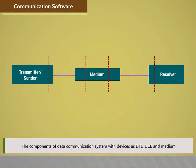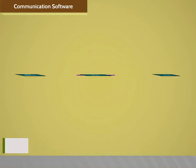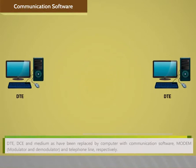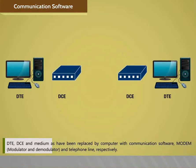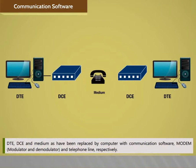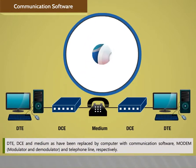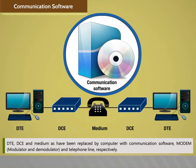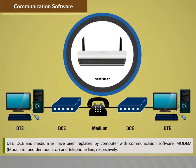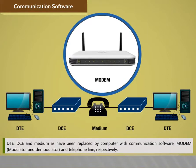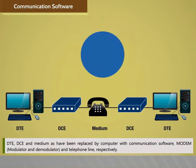The role of communication software is to assist the operating system in managing local and remote terminal access to host resources, to manage security, and to perform certain checkpoint activities. The components of data communication systems include DTE, DCE, and Medium, which have been replaced by computer with communication software, modem (modulator and demodulator), and telephone line respectively.